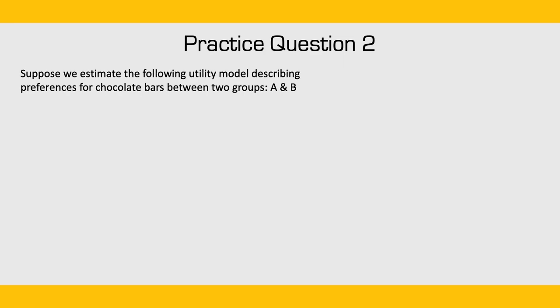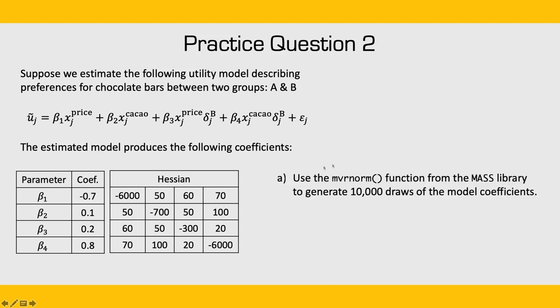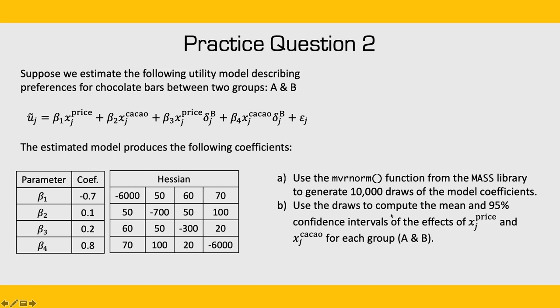For practice question two, suppose we estimate a utility model describing preferences for chocolate bars between two groups A and B. We have the attributes price and percentage cacao, and interact a dummy coefficient — taking a value of 1 if the respondent is from group B — with price and cacao. After estimating the model, we get four parameter coefficients and a Hessian. For part A, use the mvrnorm function from the MASS library to generate 10,000 draws. For part B, use those draws to compute the mean and a 95% confidence interval of the effects of price and percentage cacao for each group.